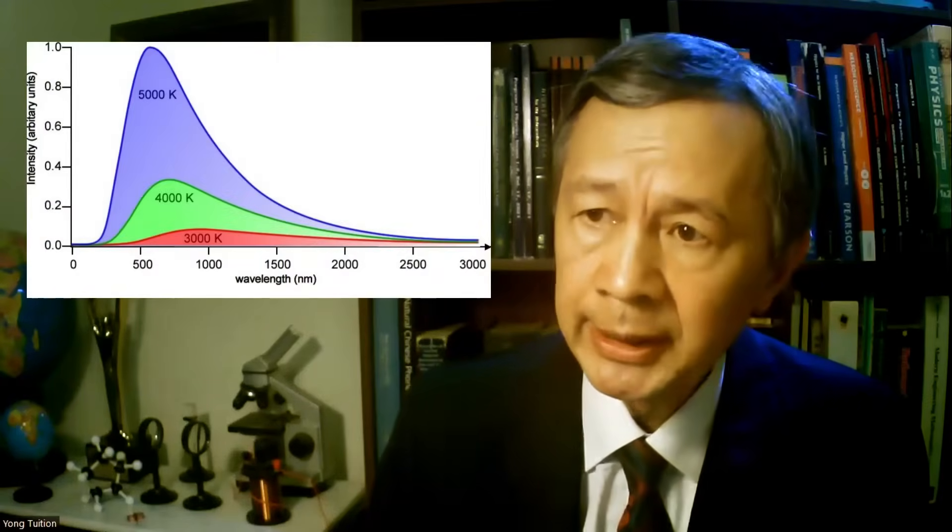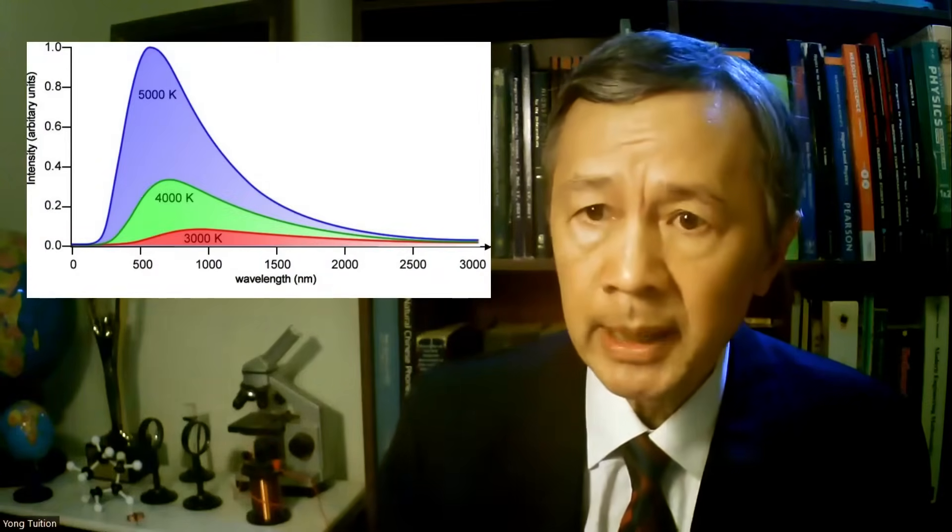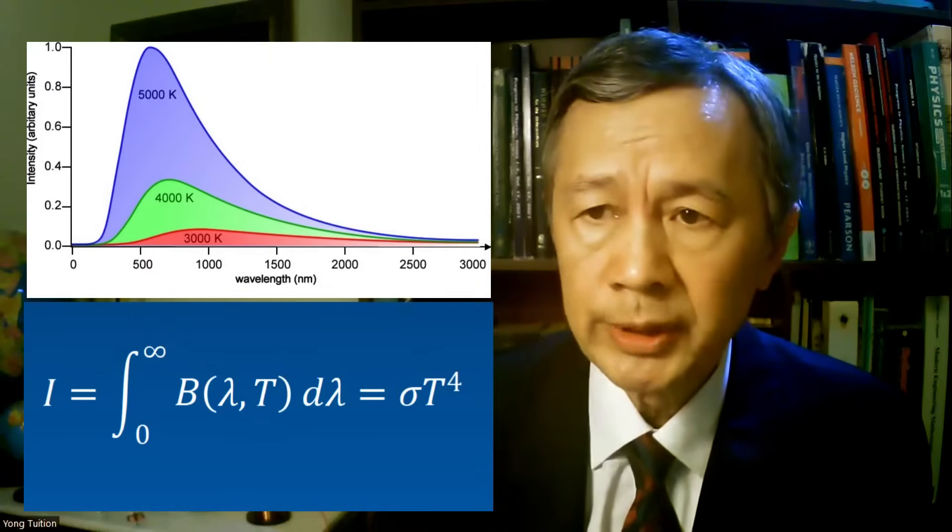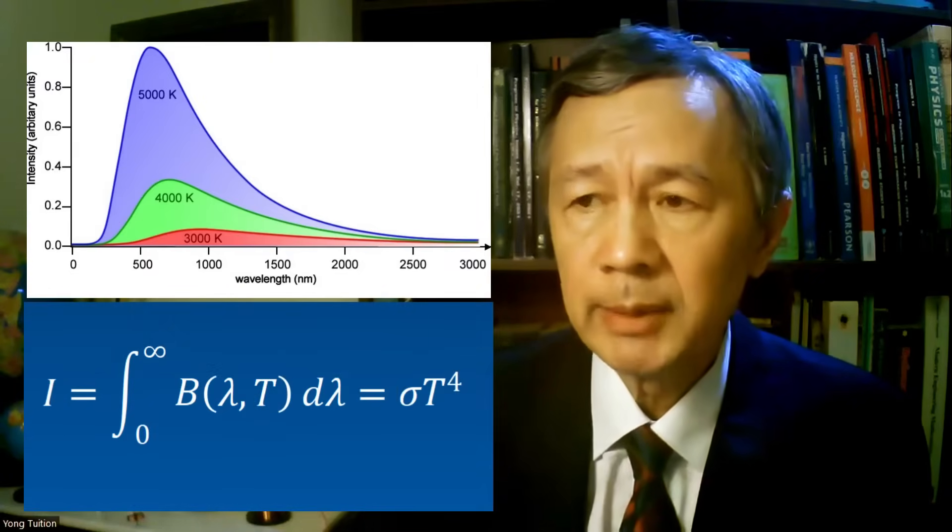Thermal radiation is one of the three ways a hot object can transfer its thermal energy to a colder object. The hot one is called the radiation emitter and the cold one is called the radiation absorber. Since 1901, thermal radiation by blackbody has been described by the Planck law, which also gives the Stefan-Boltzmann law.